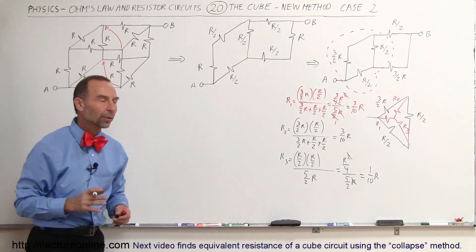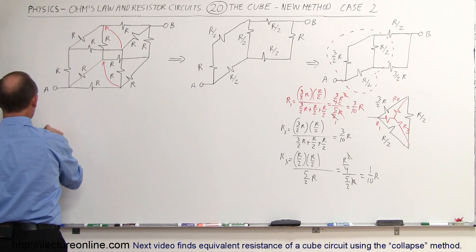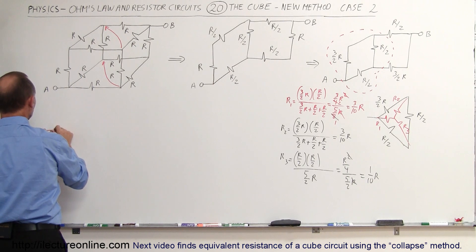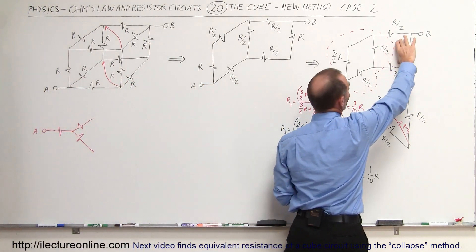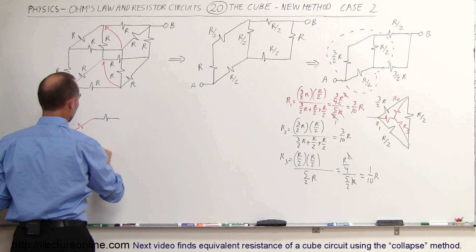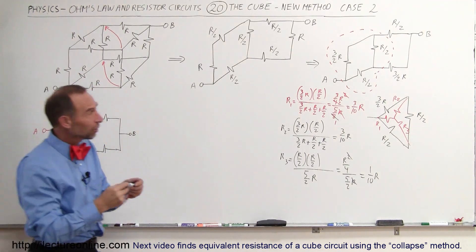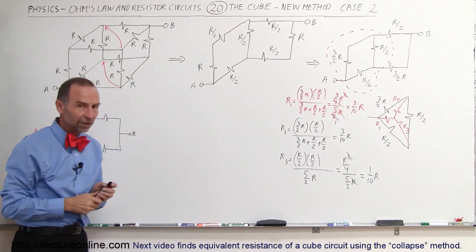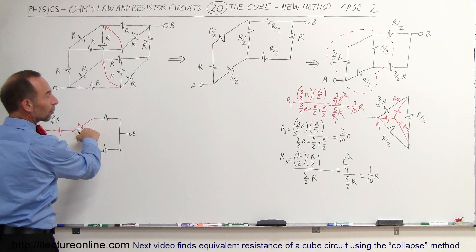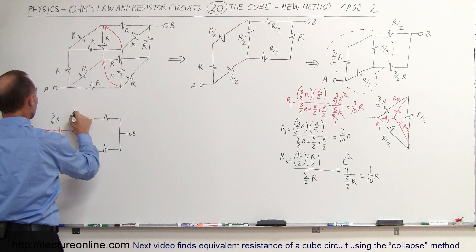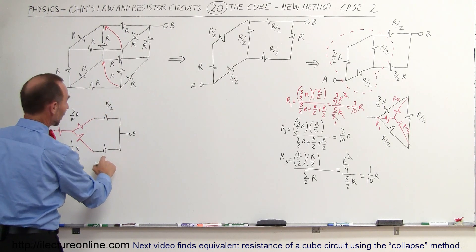So there are the three equivalent Y resistors to replace the three delta resistors. Now we can rewrite this circuit using color to make it easier. Here's my A point. I now have the three resistors that form the Y circuit, and we still have the last two resistors which I have not yet touched, and then they come together at point B. For R1 we got 3/10 R, for R2 we got 3/10 R, and for R3 we got 1/10 R. For the remaining two we still have R/2 and 3/2 R.